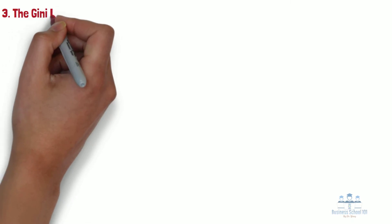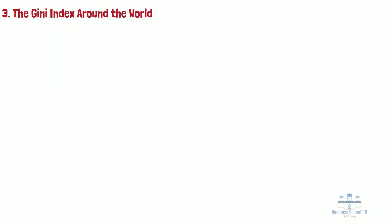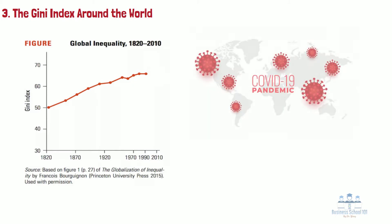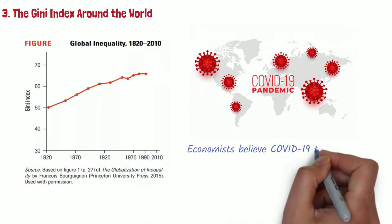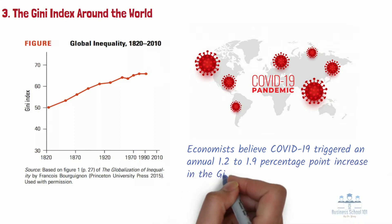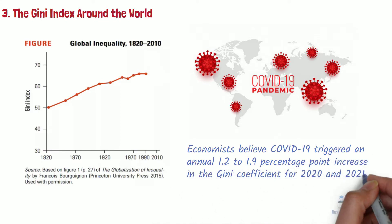Section 3: The Gini index around the world. The Gini coefficient experienced sustained growth during the 19th and 20th centuries. In 1820, the global Gini coefficient stood at 0.5, while in 1980 and 1992 the figure was 0.657. COVID-19 is likely to have a further negative impact on income equality. Economists believe COVID-19 triggered an annual 1.2 to 1.9 percentage point increase in the Gini coefficient for 2020 and 2021.